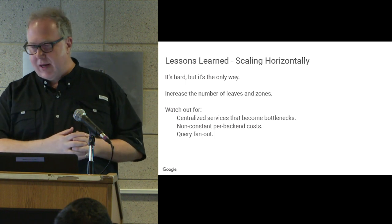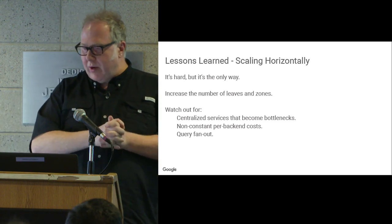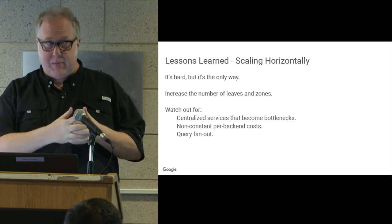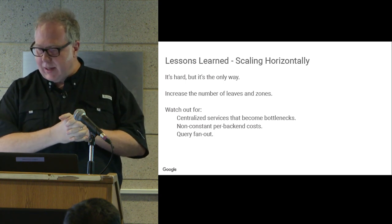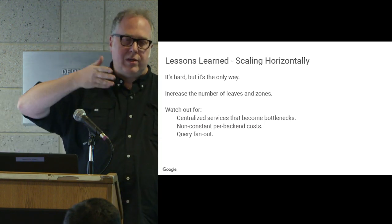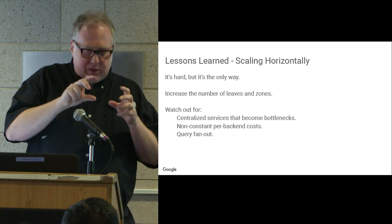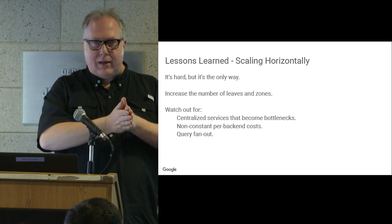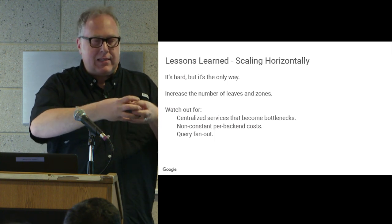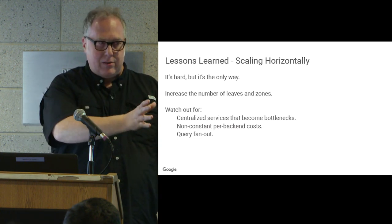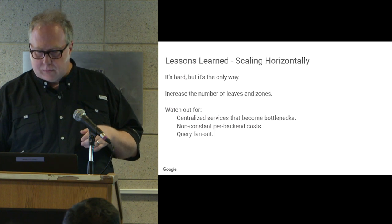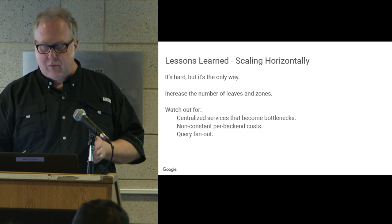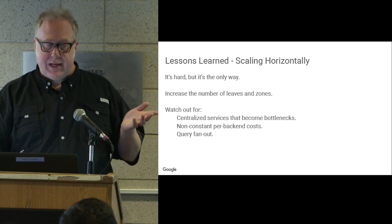The second big lesson is scaling horizontally — it's really hard but it's the only practical way to scale a system like this. For us, it's increasing the number of leaves and zones. We have to watch for centralized services that become bottlenecks, like that assigner. We also worry about non-constant per back-end costs: as the system grows, you want to start up new back ends where every data structure inside each is about the same size. Configuration can be hard — the thing that tells each back end what data to retain has to be pared down to match the data. Query costs should fan out in a constant manner, and we have a Bloom-filter-ish indexing service that helps us do that.